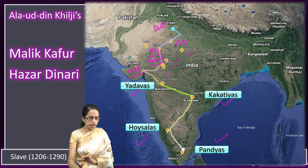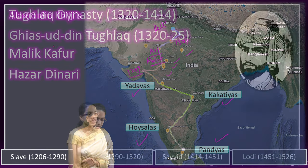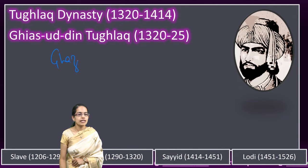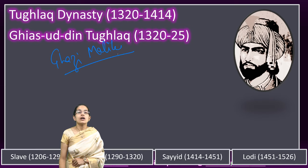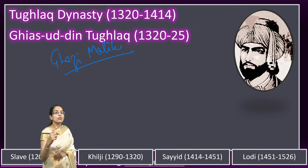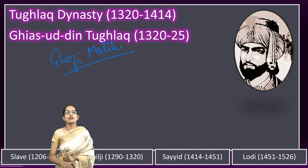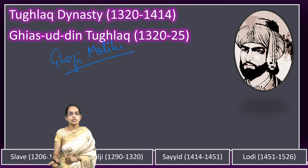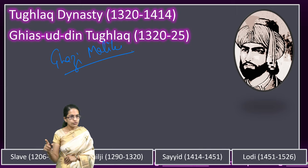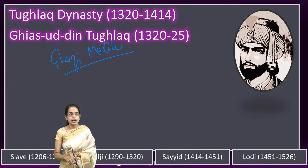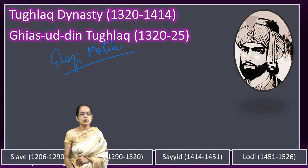Alauddin Khilji's impact was very important and historic in the Khilji dynasty. Next came the Tughlaq dynasty. Ghiyasuddin Tughlaq was the founder of the Tughlaq dynasty, originally named Ghazi Malik. After Alauddin Khilji's death, his most trusted general Malik Kafur rose to power briefly, but a conspiracy among the slaves removed him, and the Tughlaq dynasty rose to power under Ghazi Malik, or Ghiyasuddin Tughlaq.